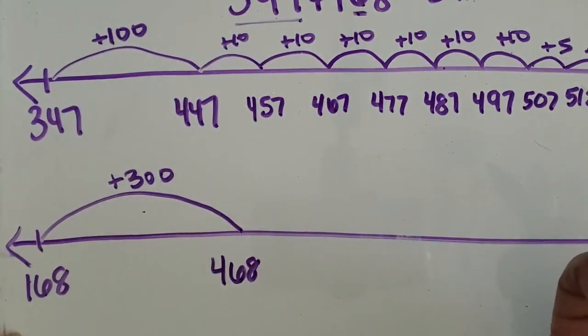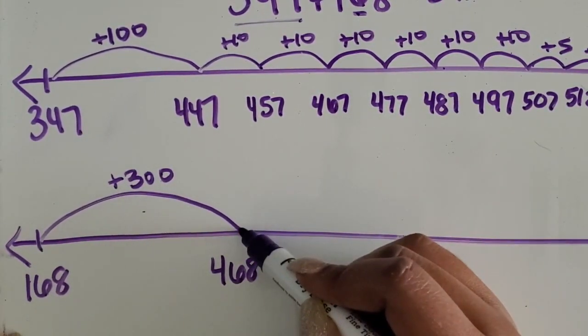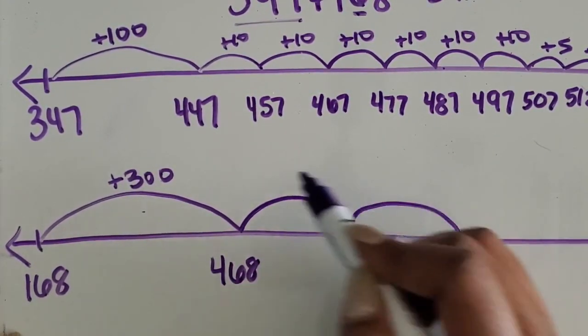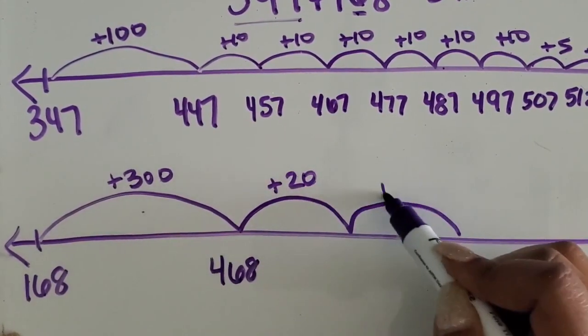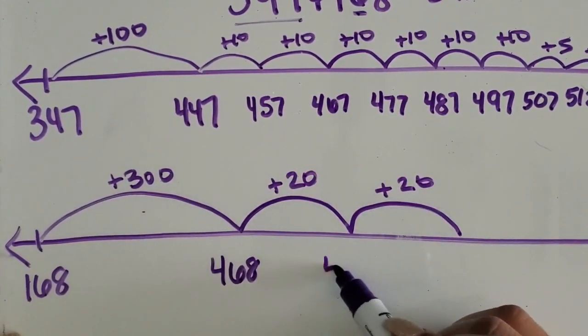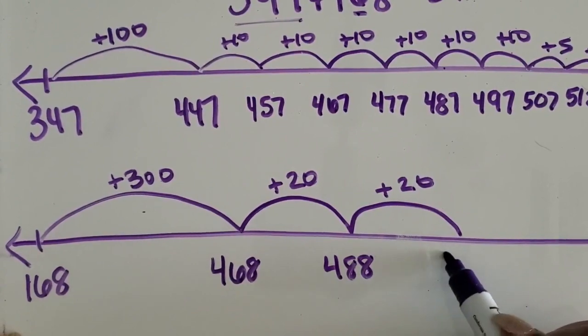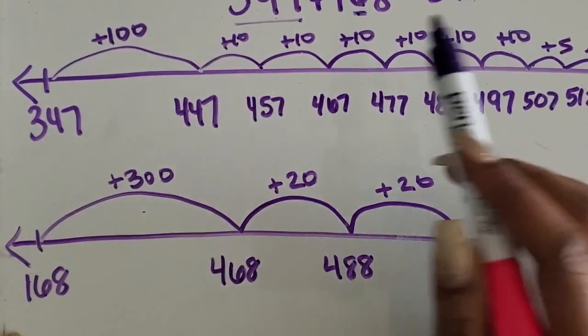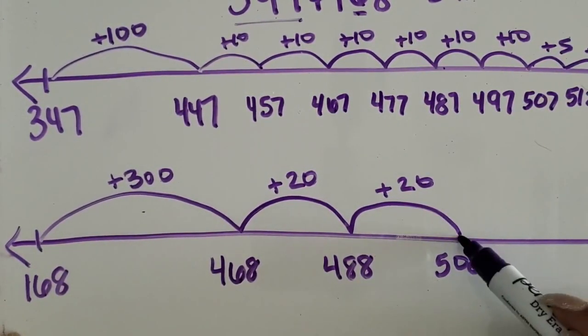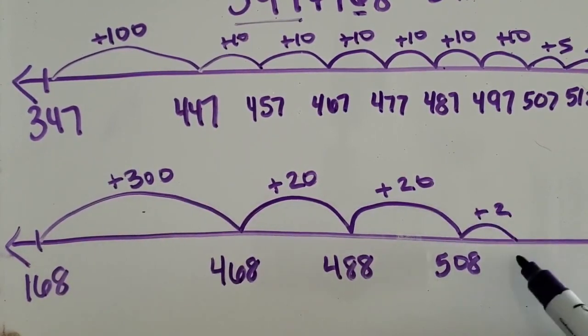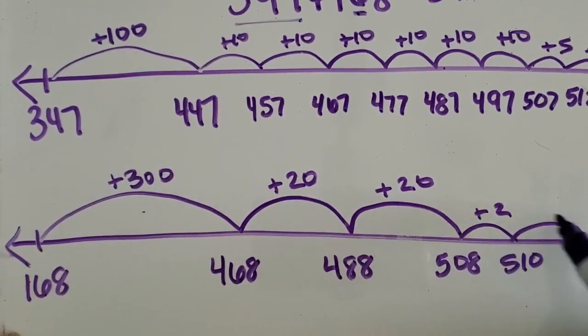Then I have four tens, 40. I think I'm going to do 20 and 20, which gives us 488, then 508, and then I'm going to add the seven. I'm going to add two to get to 510 and then add five to get to 515.